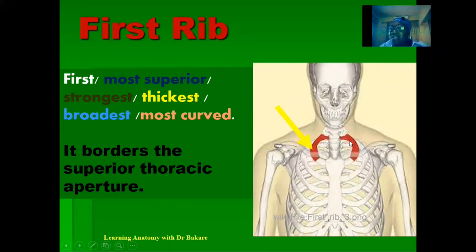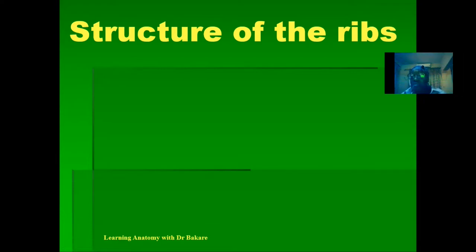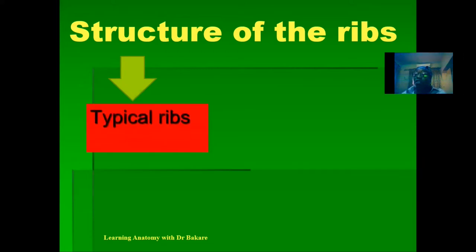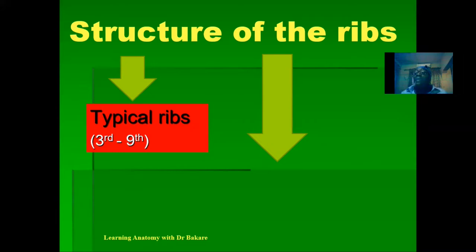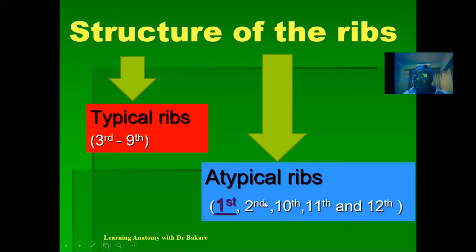Generally, to study the structure of ribs, they are divided into typical or atypical. Typical ribs have the same structural configuration — they look alike in terms of gross presentation — and this is seen from the third to the ninth ribs. Atypical ribs are distinct and have distinguishing features. The atypical ribs include the first rib, the second rib, the 10th rib, the 11th, and the 12th rib. This lecture will focus on just the first rib.